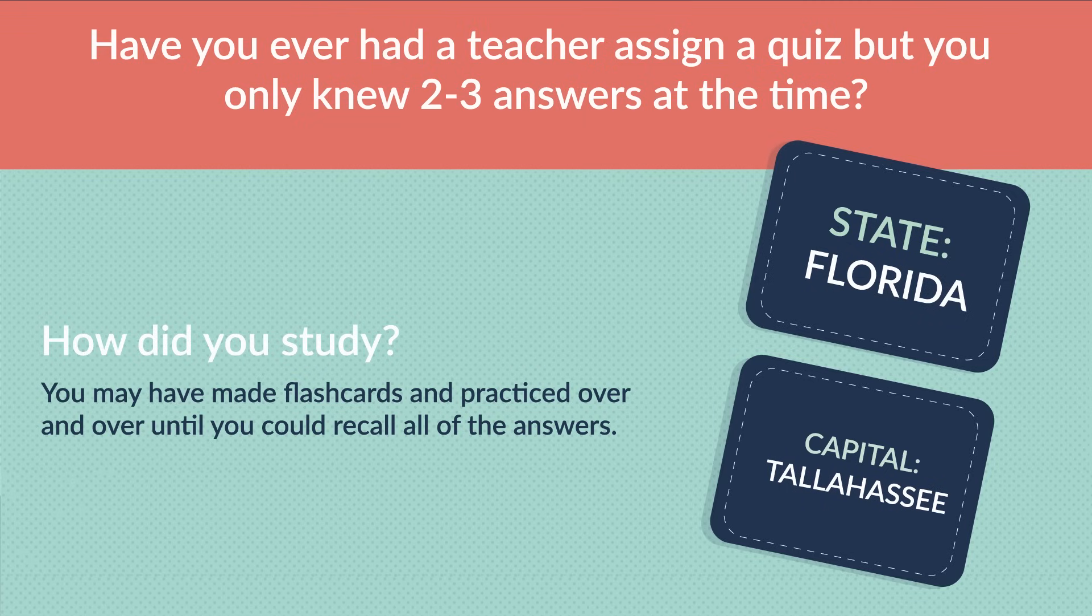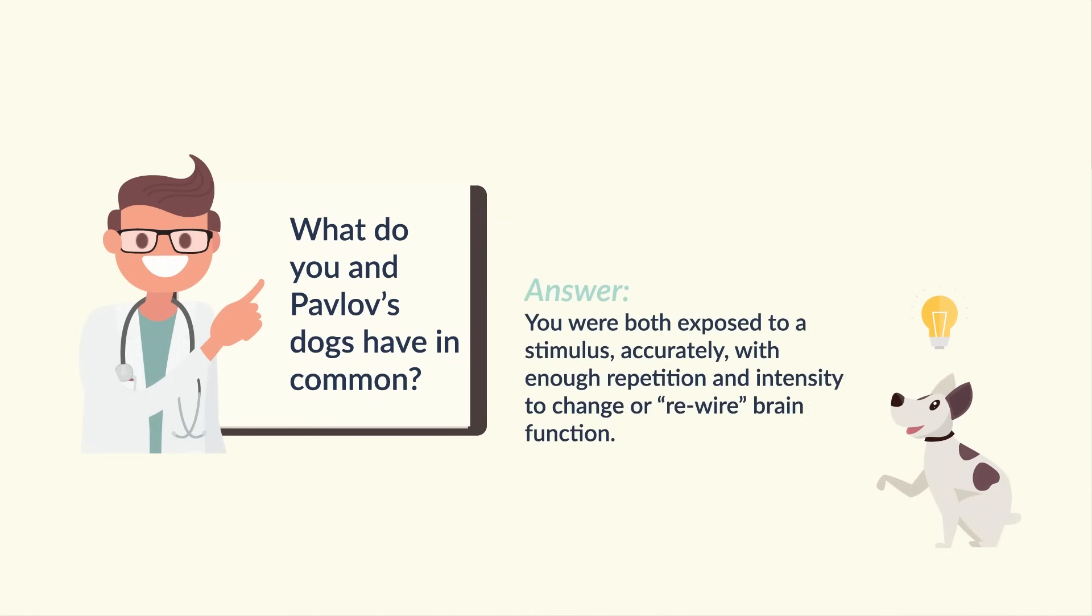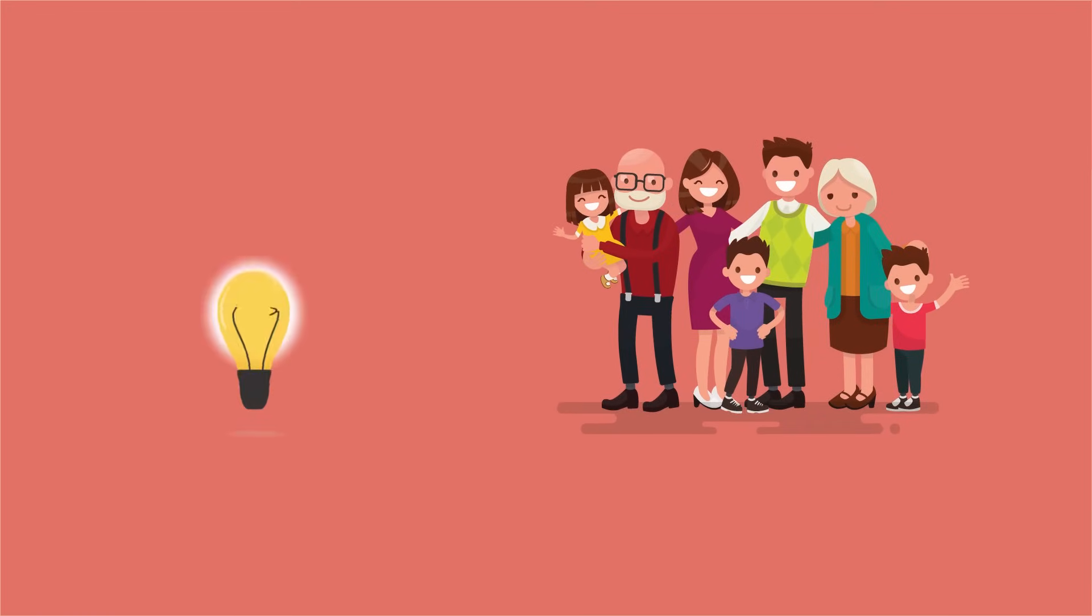So what do you and Pavlov's dogs have in common? Each of you have both experienced the benefits of neuroplasticity. You're both exposed to stimulus accurately with enough repetition and intensity to rewire brain function. So essentially, neuroplasticity could be considered as learning. And what's the expression? An old dog can always learn new tricks.